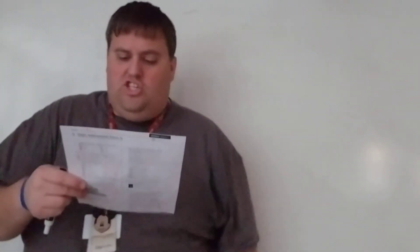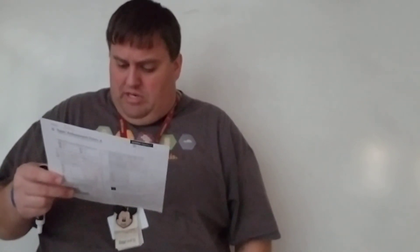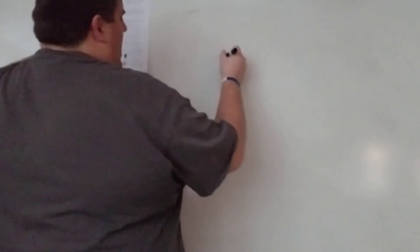Number eighteen: the minus three at the end shifts the graph down three units — a minus or plus at the end is a vertical shift. Number nineteen: the change is in the exponent, written as x minus four, which is a horizontal shift. Remember it's the opposite direction, so it shifts to the right four units.